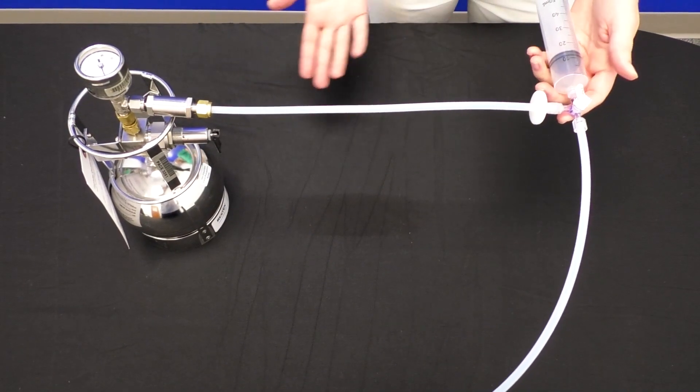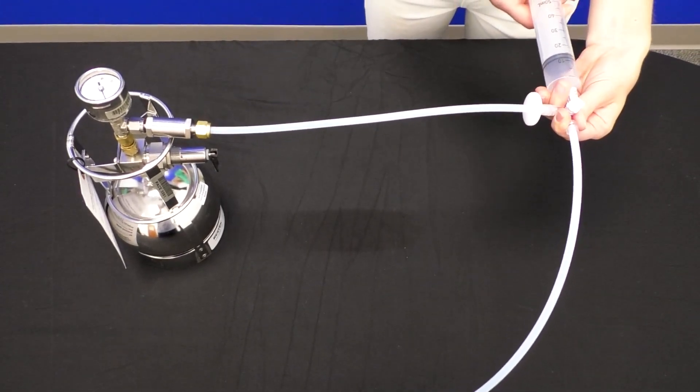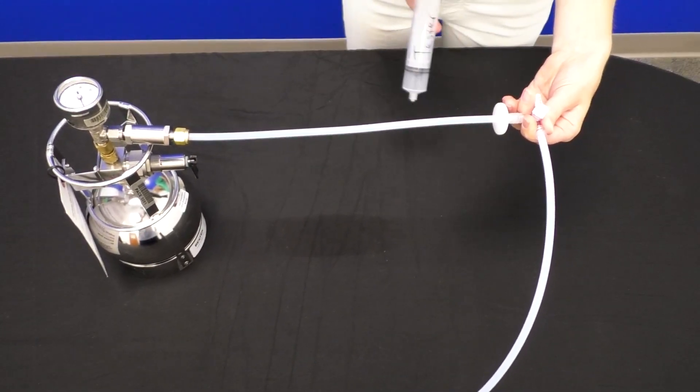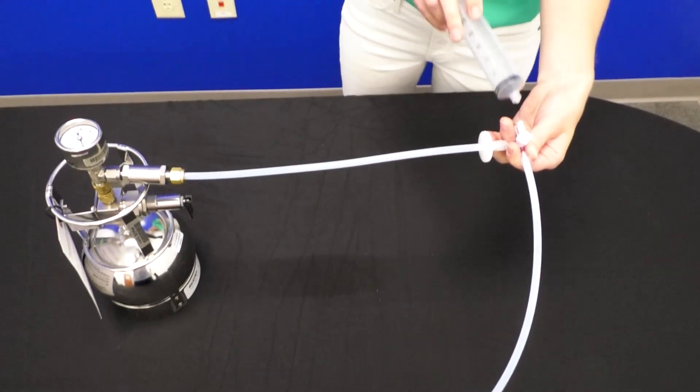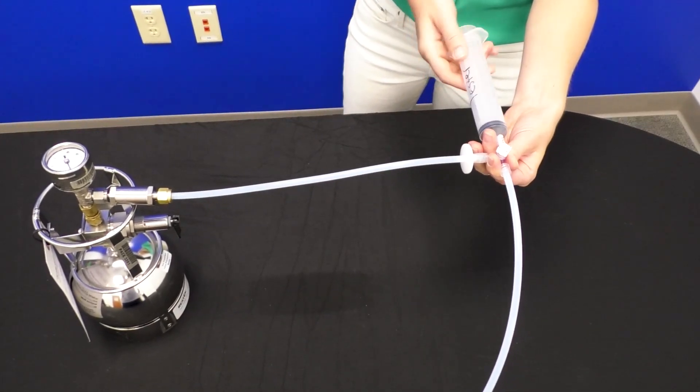And then once your leak check is confirmed, if you would like to purge your sampling line, you can use the syringe in the same way. Just unscrew it and exhaust the air that you drew out.